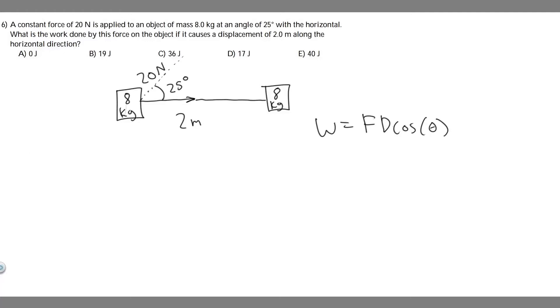In this problem, we're told a constant force of 20 newtons is applied to an object of mass 8 kilograms at an angle of 25 degrees with the horizontal. What is the work done by this force on the object if it causes a displacement of 2 meters along the horizontal direction?